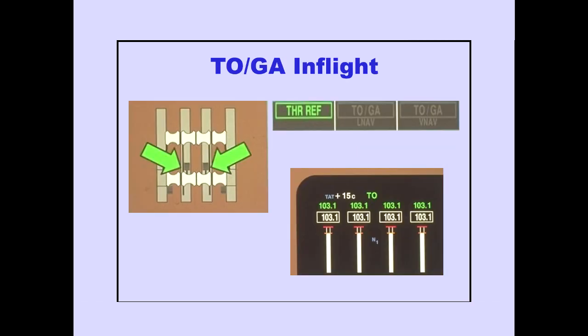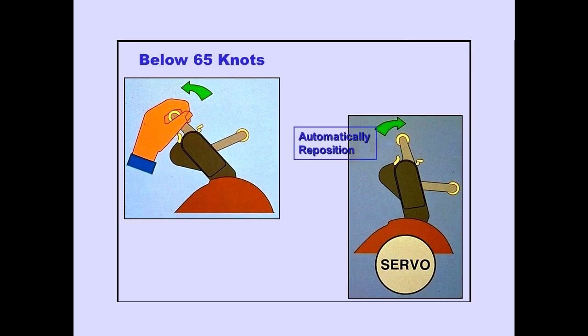Pushing the TOGA switch when in-flight cancels any takeoff derates. Thrust reference is still displayed on the PFD, and the reference thrust becomes full takeoff thrust. If the thrust levers are manually moved below 65 knots, the thrust levers will automatically reposition to the reference thrust limit.